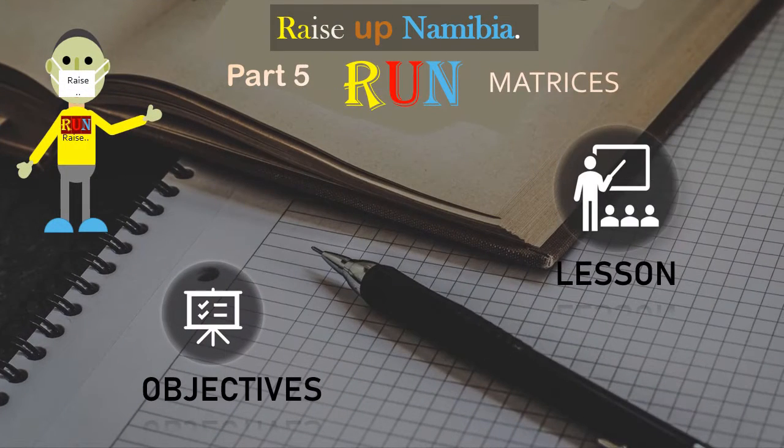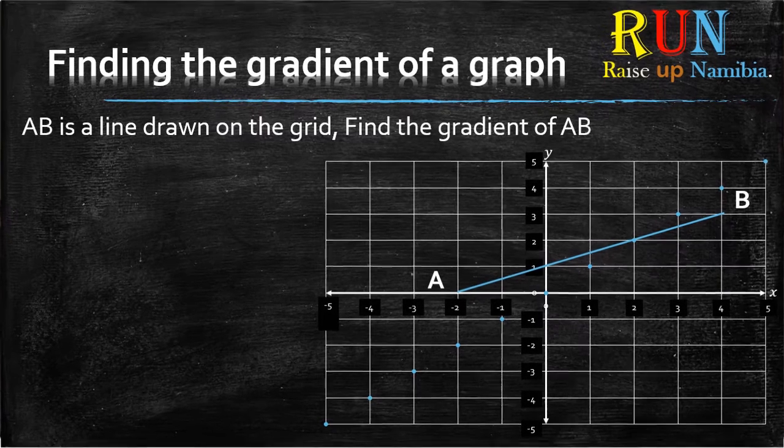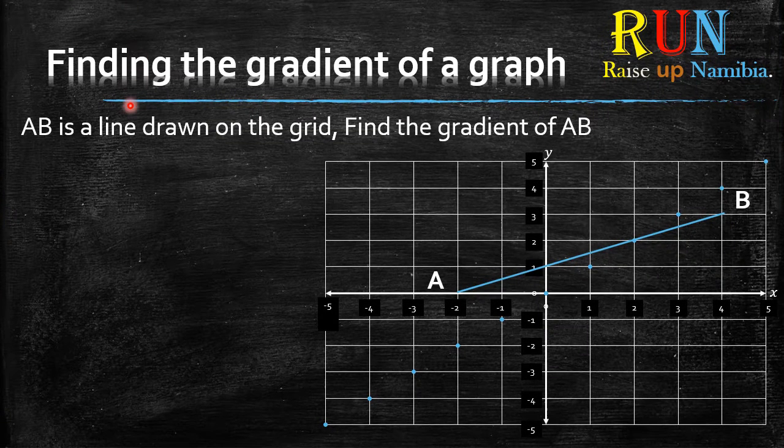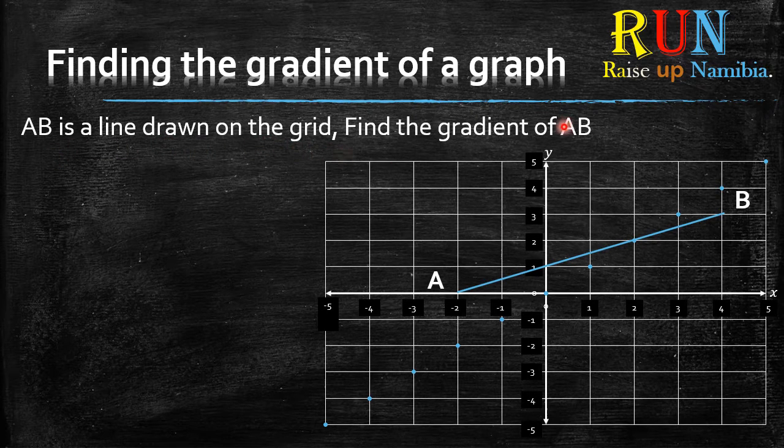Now that we are done with the objectives, let's take a look at the lesson. Get your pens and your notebooks ready. Here we have AB is a line drawn on the grid. Find the gradient of AB. Where is AB? AB is this line.